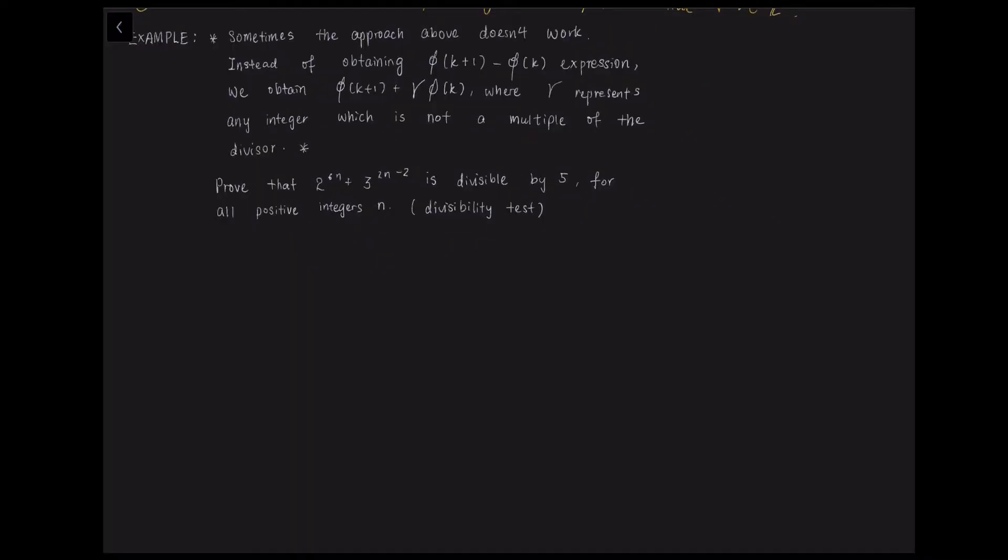What we have done just now was the subtraction, so phi k plus 1 minus phi k. But sometimes the above approach does not work. Instead of obtaining an expression for phi k plus 1 minus phi k, we obtain an expression for phi k plus 1 plus gamma phi k, where gamma represents any integer which is not a multiple of the divisor.